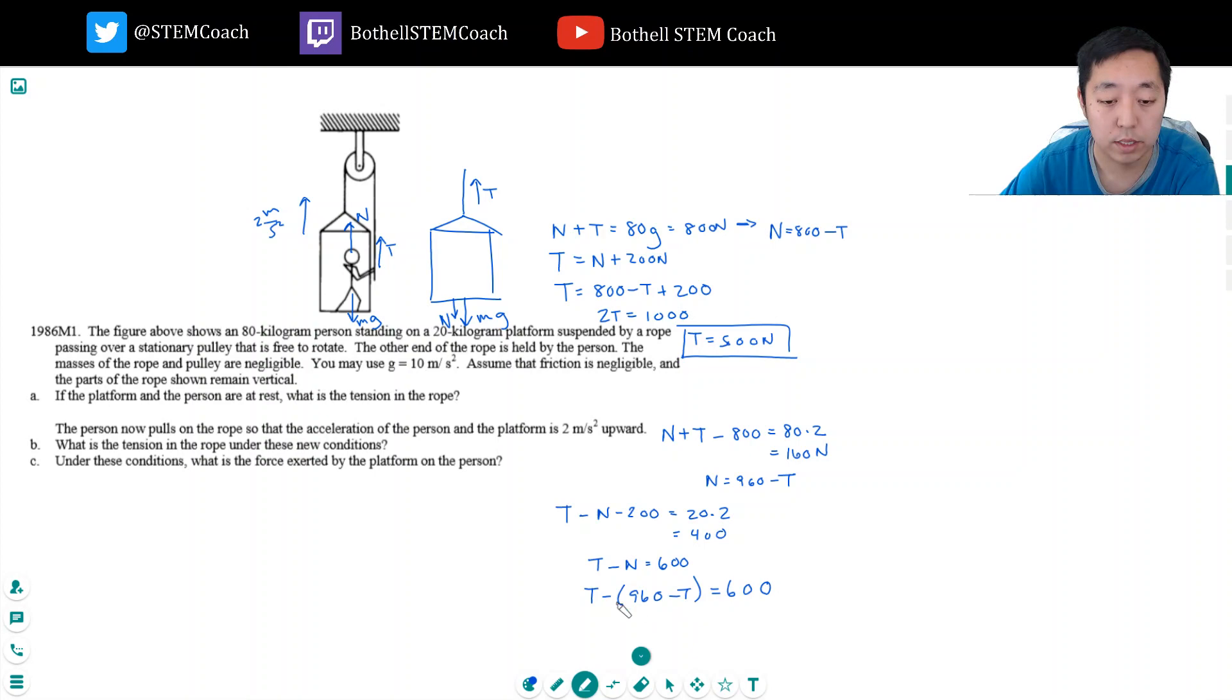So I have T minus 960 minus T is equal to 600. Another way, this is 2T equals 600 plus 960, which is 1560. So now the tension is equal to 780 newtons. See, like now the tension's increased, which makes sense.